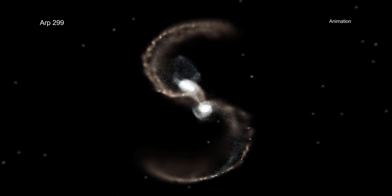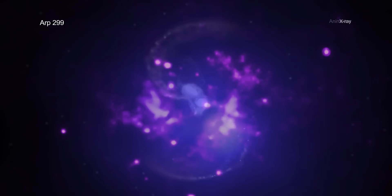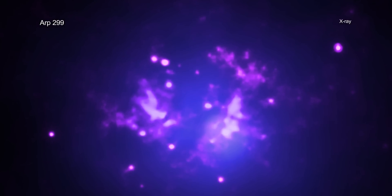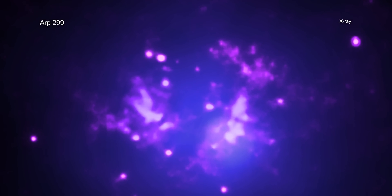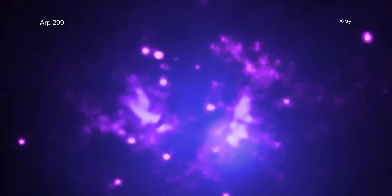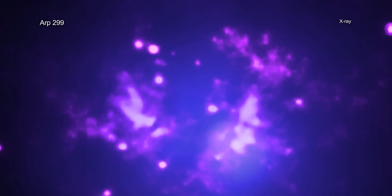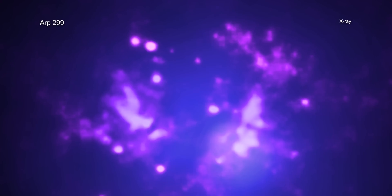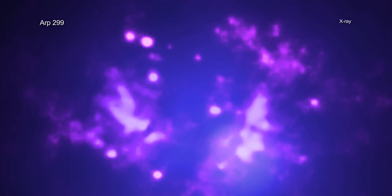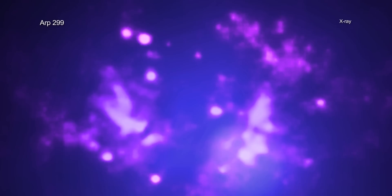However, this stellar mix is not the only ingredient. Data from Chandra reveal 25 bright X-ray sources sprinkled throughout the ARP 299 concoction. Fourteen of these sources are such strong emitters of X-rays that astronomers categorize them as ultraluminous X-ray sources, or ULXs.